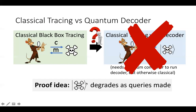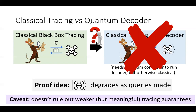The idea behind the impossibility is that we can set up a decoder such that in the black-box model of tracing, every time you make a query the quality of the decoder degrades, to the point where after enough queries the decoder is essentially useless but you don't have enough information to identify the traitor. This is only a weak barrier — it shows that the definition we defined is impossible to achieve in the classical black-box tracing model. It doesn't rule out weaker tracing guarantees, but it shows that the guarantees you get classically cannot be generically lifted to the quantum setting.